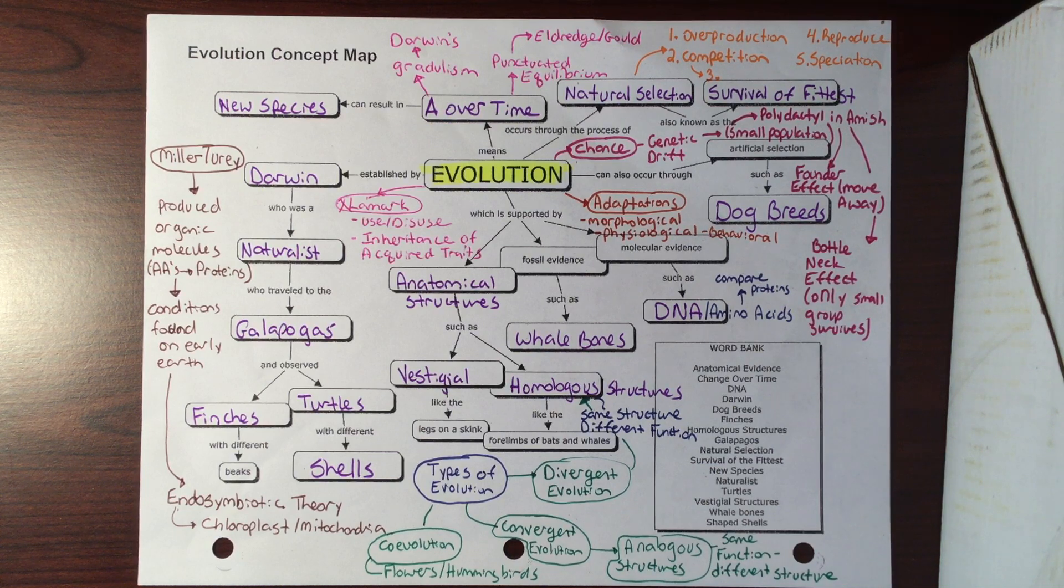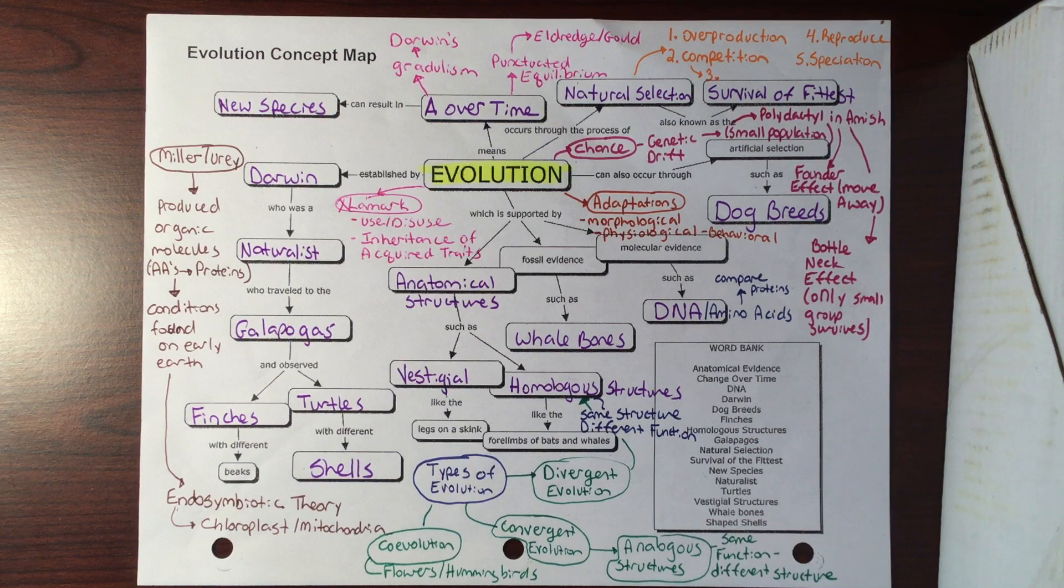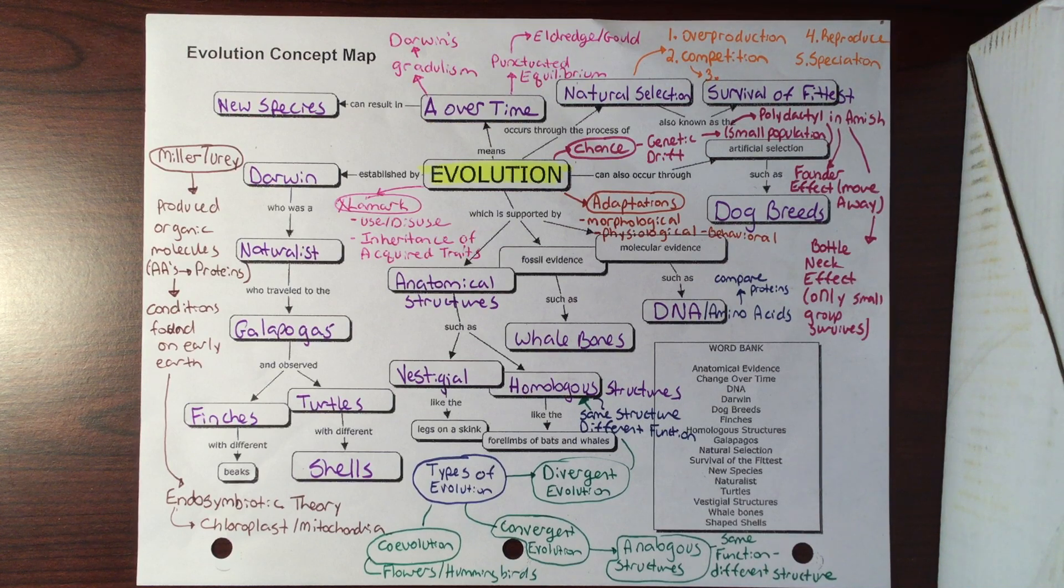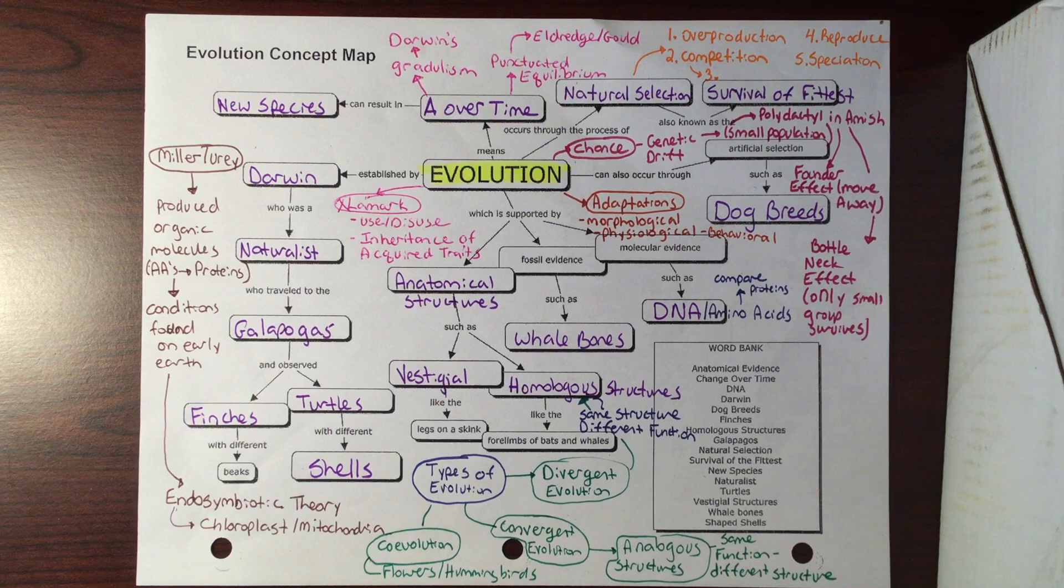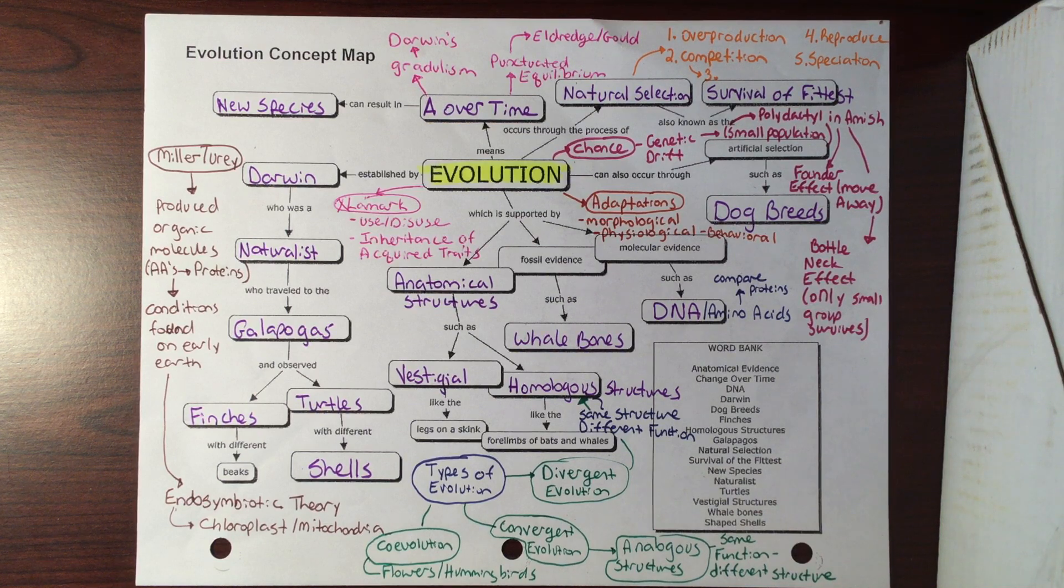Binomial nomenclature - two-part naming system. Genus and species. Genus is capitalized, species is lowercase. It's either italicized or underlined and always written in Latin. Lamarck's with evolution. Linnaeus and his classification system. Aristotle was the first one, Linnaeus kind of built upon it.